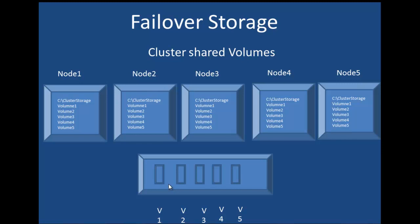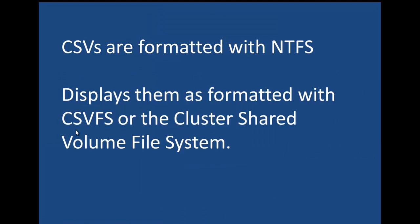The CSVs containing these VHDs are then mapped to a common namespace on all nodes in the cluster. So in our cluster here, you can see on every node a common namespace, where you have the cluster storage folder on the system drive, and you have the subfolders Volume 2, 3, 4, and 5 — and this exists on every node. Cluster shared volumes are formatted with NTFS format, but they are displayed as CSVFS, or the cluster shared volume file system.